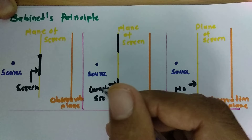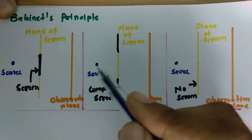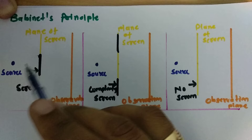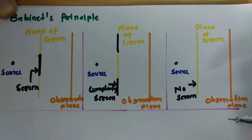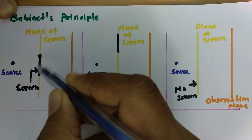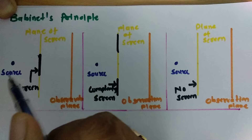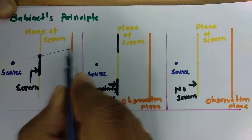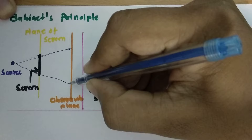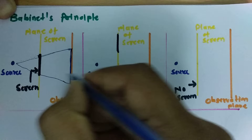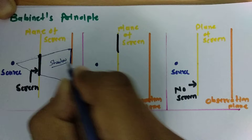Here we have a source that has been considered for three cases, which is radiating an optical signal on this observation plane. By this orange color, I have shown the observation plane that one can see in all three cases. Now, when you place a screen on the plane of screen, when this source radiates light, it will fall on this observation plane. One will observe there is a shadow — the reason being this screen that is coming in between the source and the observation plane.